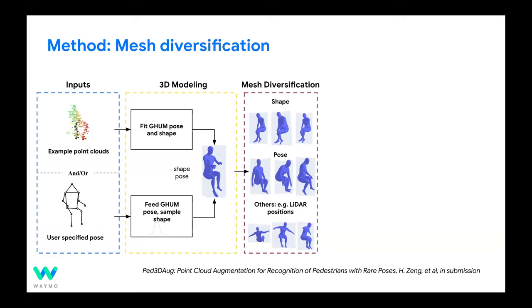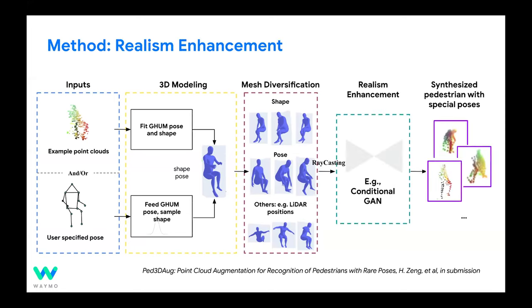For example, you can change the shape of the pedestrians a bit — they can be more skinny or more fit — and change the pose so they're not strictly sitting down but vary their actions. We then apply realism enhancement to make sure the meshes look realistic when we generate the final point clouds.